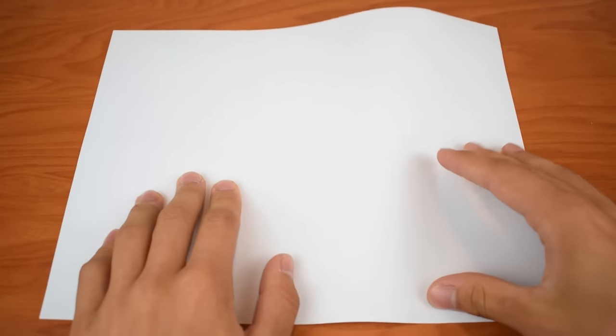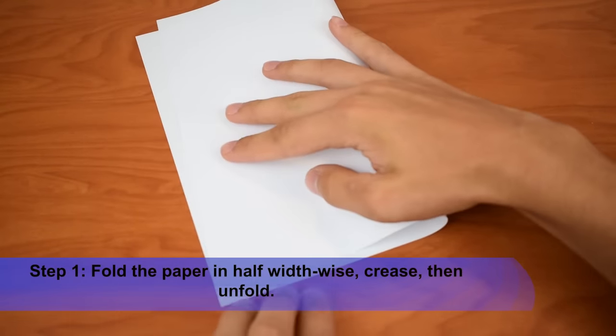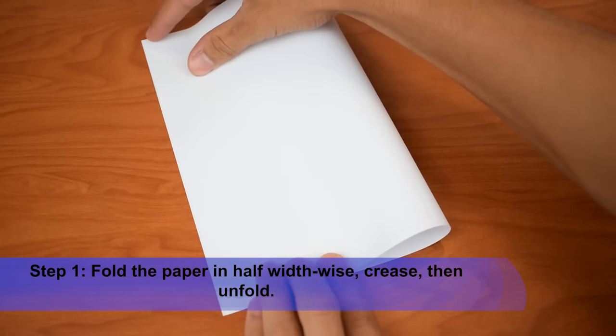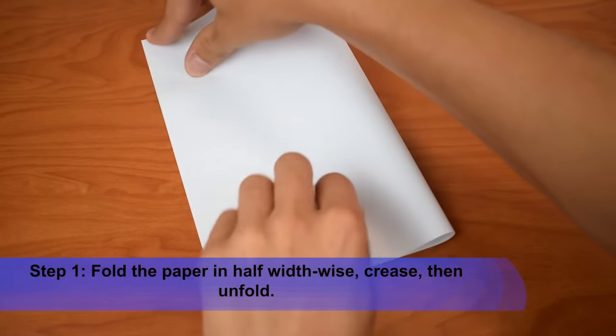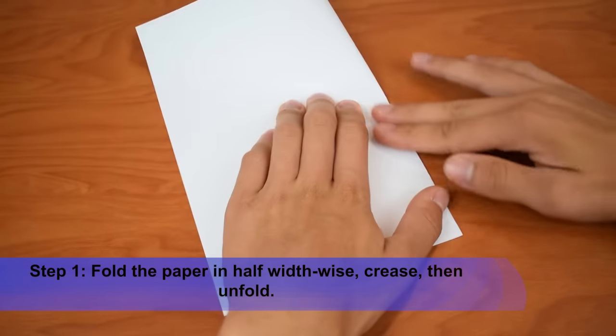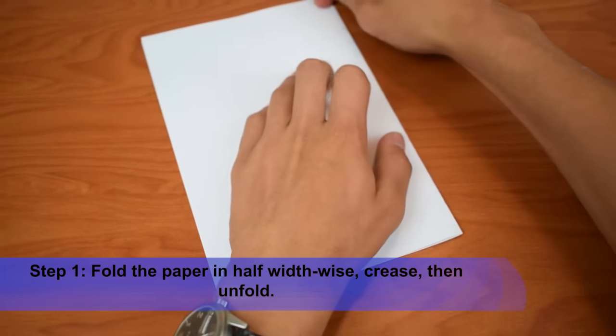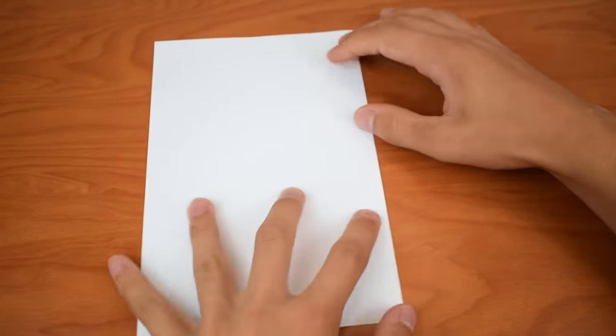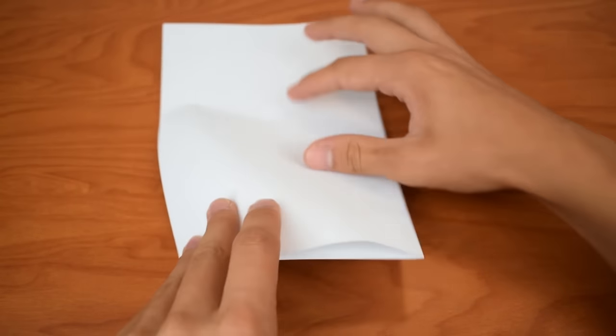So let's go ahead and get started. First thing we're going to do is we're going to fold this edge over to that edge. Now this can be a fairly strong crease. So take your time, make sure that all the edges are lined up, and then go ahead and use your fingernail and make a nice, strong crease like that. Now we're going to unfold.